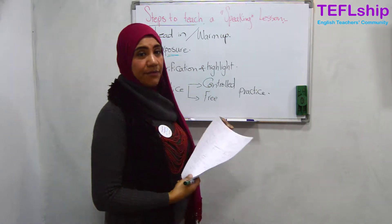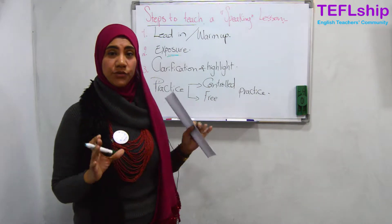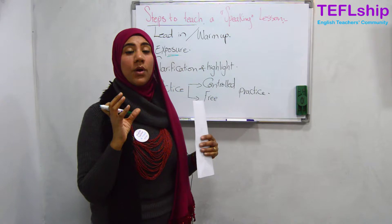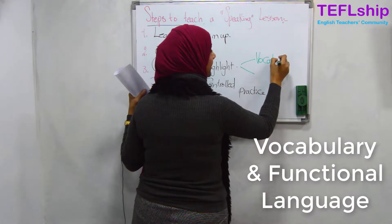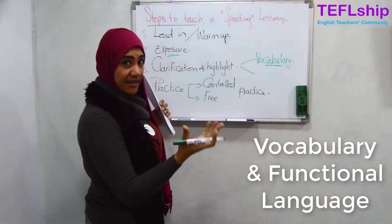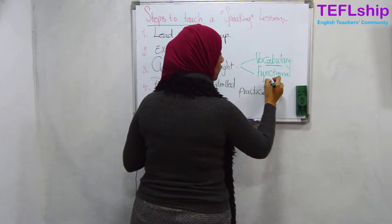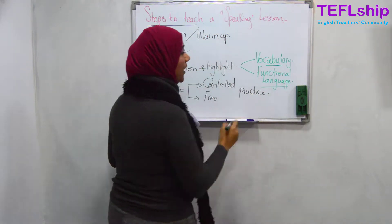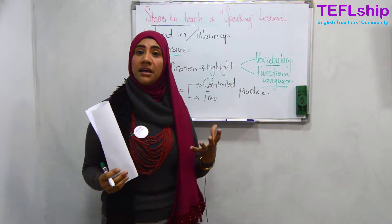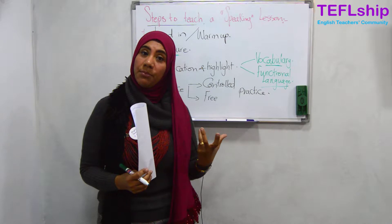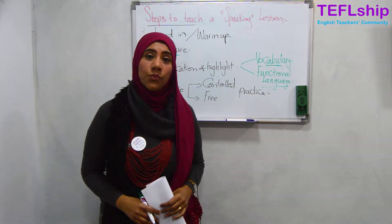After your students are exposed to the language and answer the questions you gave them, comes the clarification and highlight process. This is where you zoom in on the language you want them to practice. You need to teach them the vocabulary they need in order to start speaking, and the functional language — meaning the grammar they will use to put new words into the proper context so they can speak about the topic.